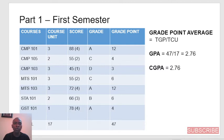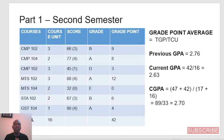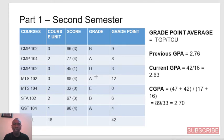Now let's see what happens when the student gets into the second semester of Part 1. These are the courses the student is offering and their respective course units. The assumed scores are: 66, which is B — 3 points; 77, which is A — 4 points; 45, which is D — 1 point; 88, which is A — 4 points; 32, which is E — 0 points; 67, which is B — 3 points; and 90, which is A — 4 points.